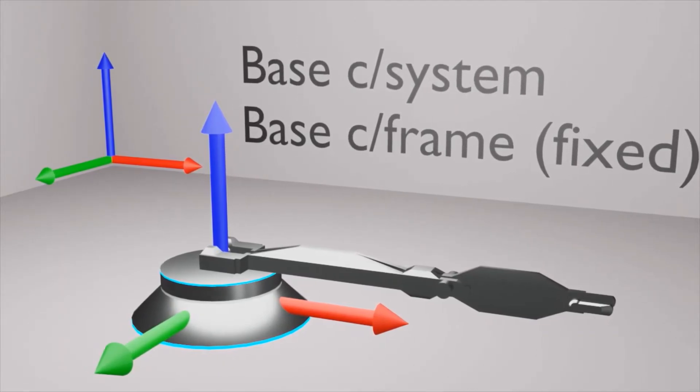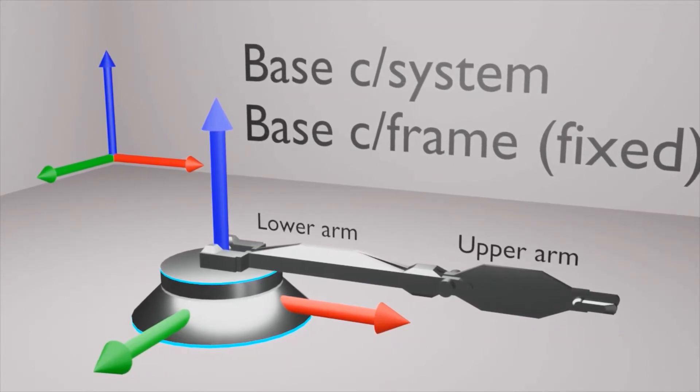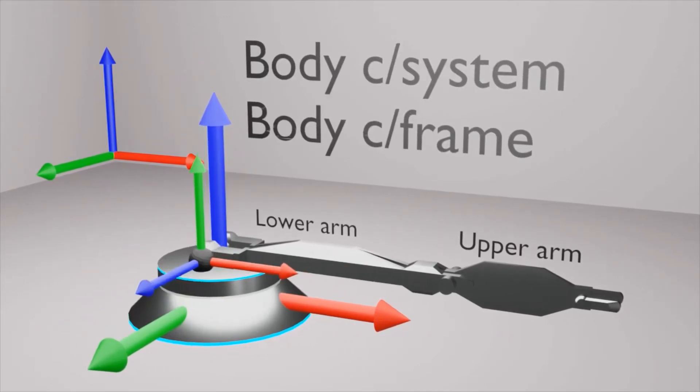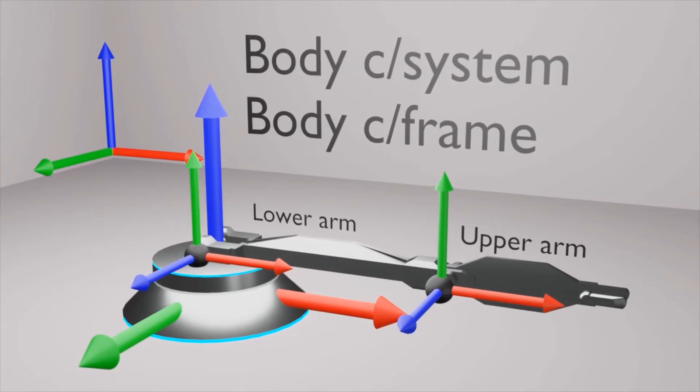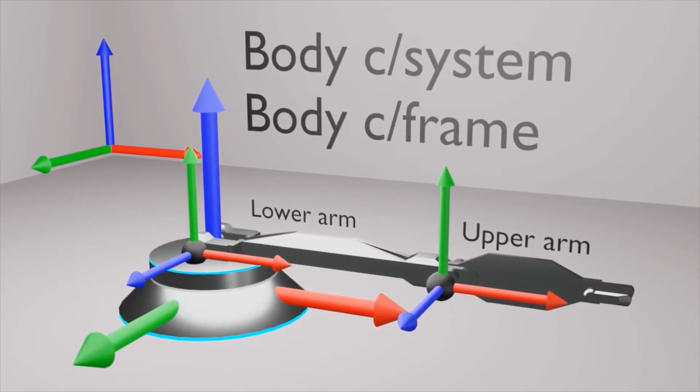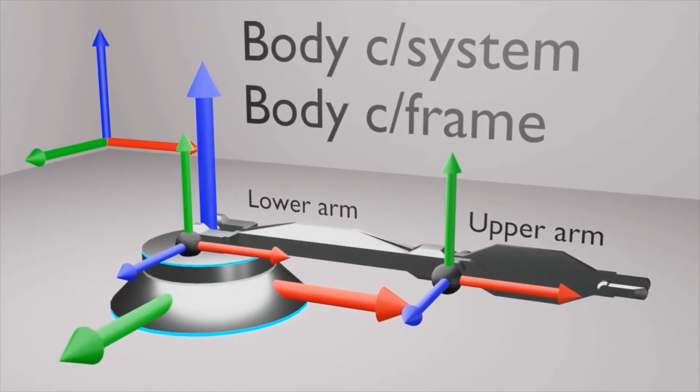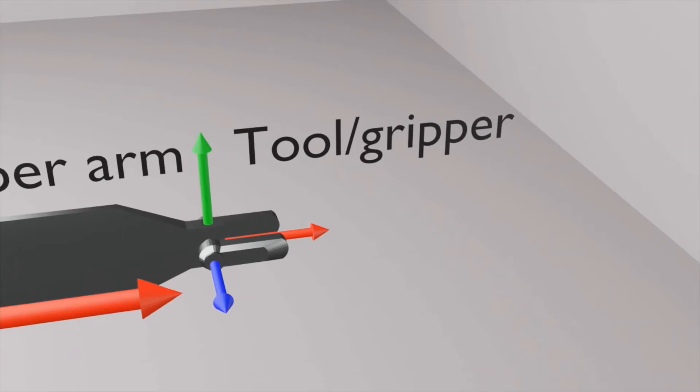Similarly other parts of the robot, that is lower arm and upper arm, have coordinate systems called body coordinate system or body coordinate frame. Just for information these parts are called as links which are not deformable. The tool attached to the robot has a coordinate system called as tool coordinate system or tool coordinate frame.